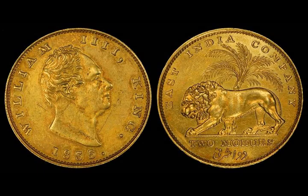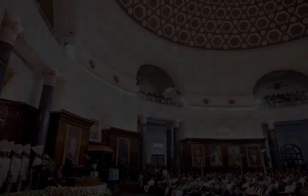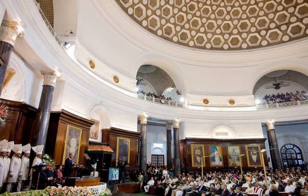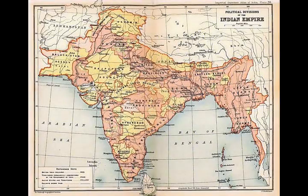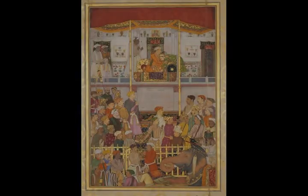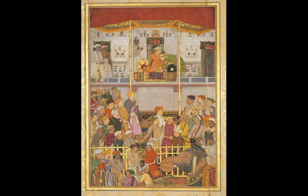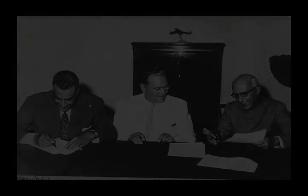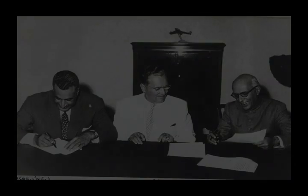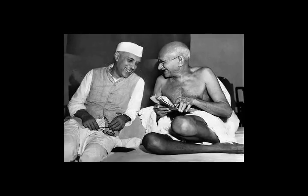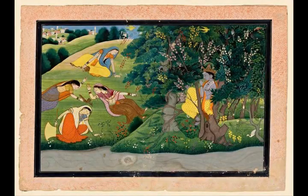After the 1965 war with Pakistan, India began to pursue close military and economic ties with the Soviet Union; by the late 1960s, the Soviet Union was its largest arms supplier. Aside from its special relationship with Russia, India has wide-ranging defence relations with Israel and France. In recent years, it has played key roles in the South Asian Association for Regional Cooperation and the World Trade Organisation. The nation has provided 100,000 military and police personnel to serve in 35 UN peacekeeping operations across four continents. India has close economic ties with countries in South America, Asia, and Africa, and pursues a look-east policy that seeks to strengthen partnerships with ASEAN nations, Japan, and South Korea, especially involving economic investment and regional security.